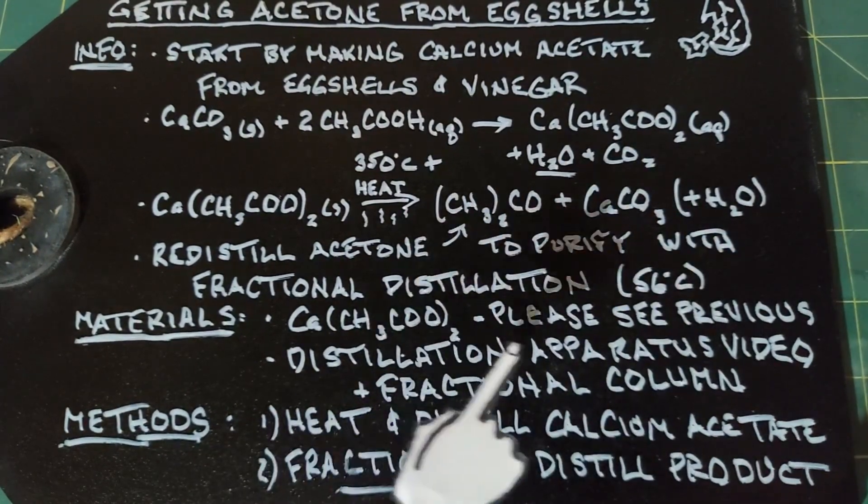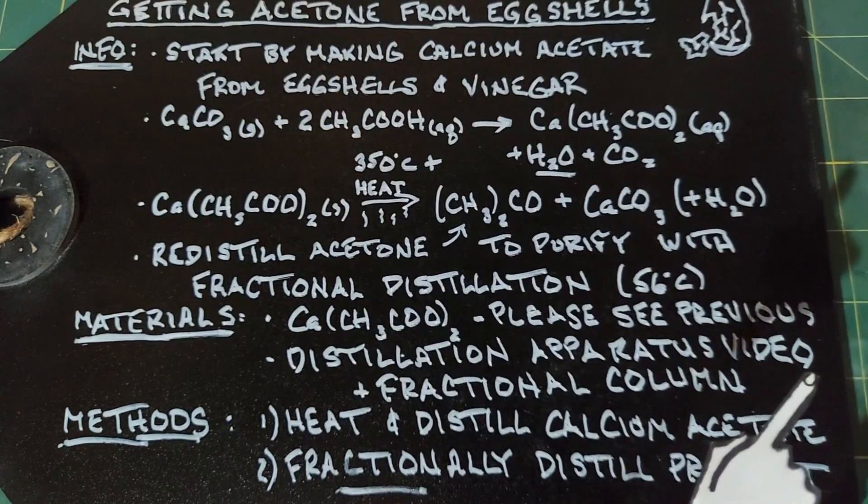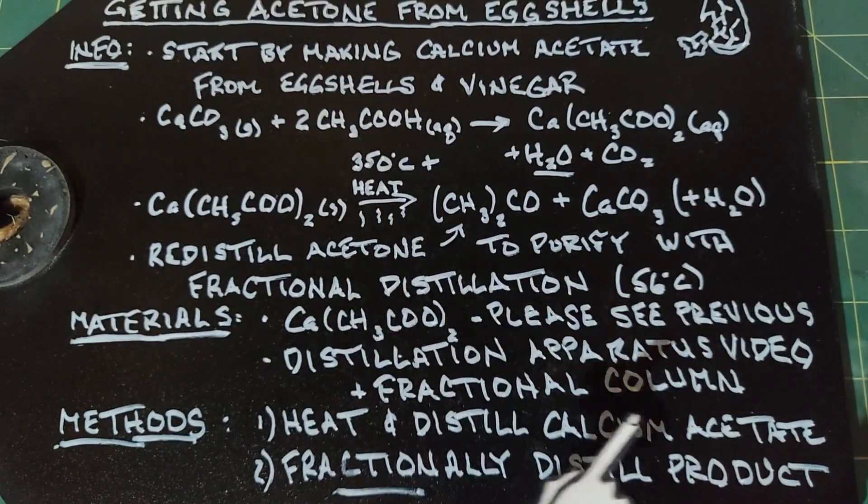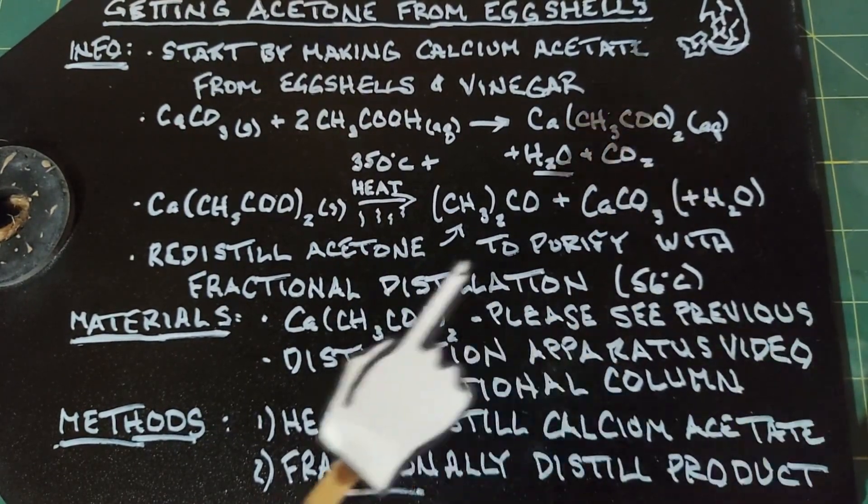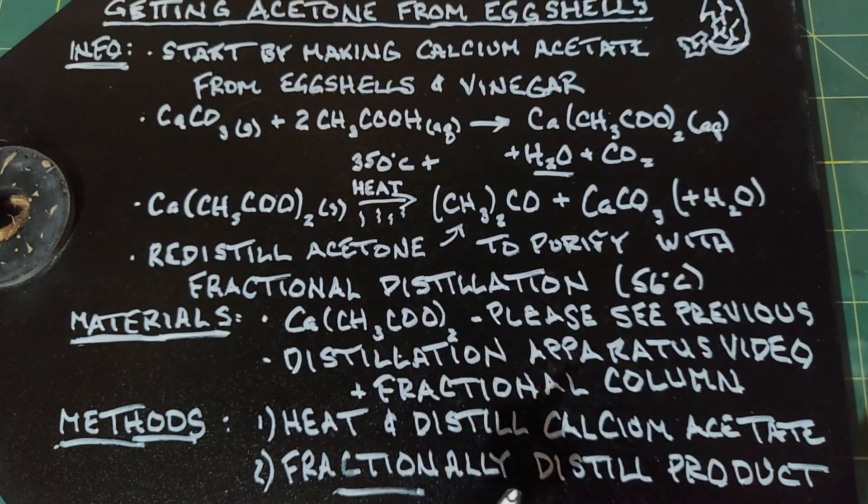And you need a distillation apparatus which has a fractional column for the second distillation. Our methods, we're going to heat and distill the calcium acetate to start with, and then we're going to take the product and we're going to fractionally distill it in order to get our pure acetone in the end.